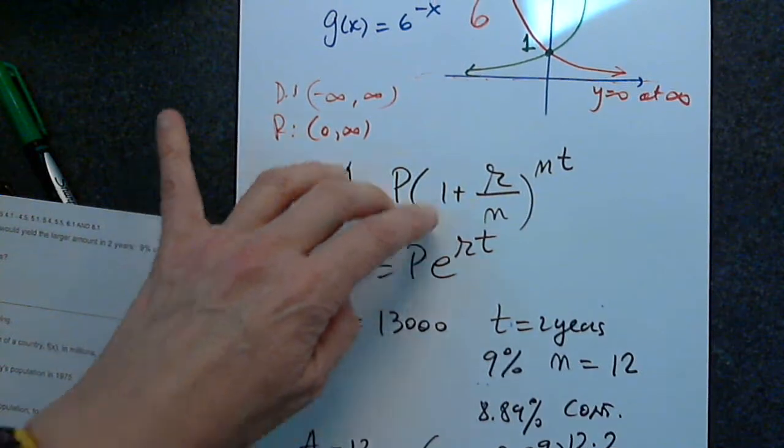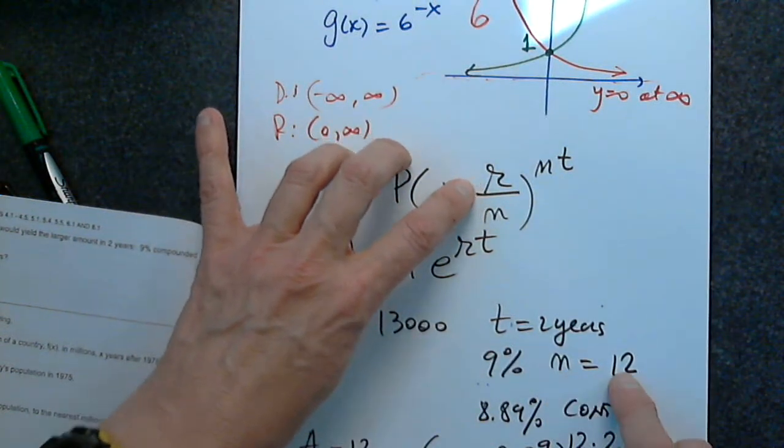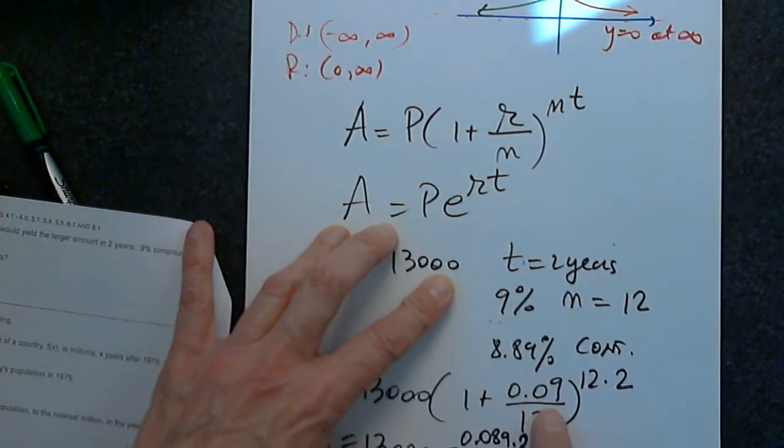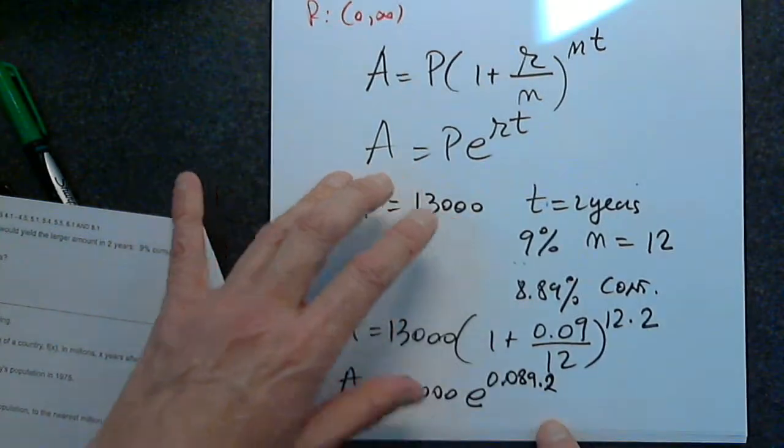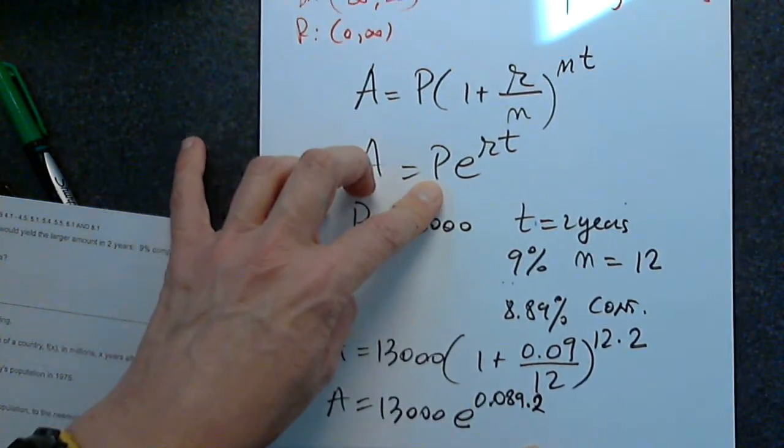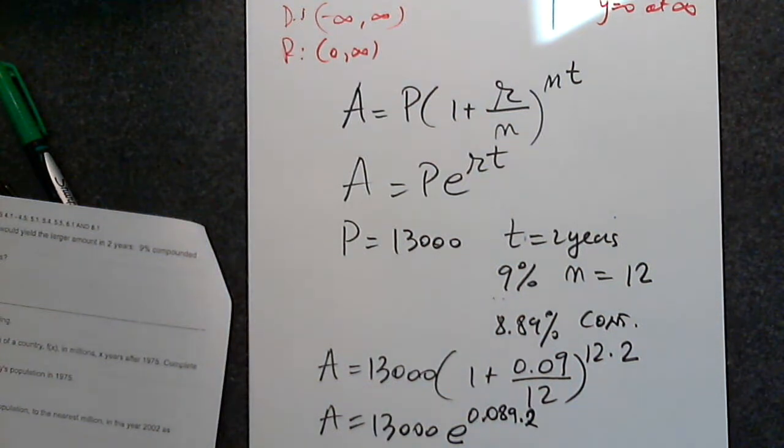All we did was plug in the numbers one more time. The P is the principal, which is 13,000. R is the interest in the first one, compounded 12 times a year, which is this 0.09. And N is 12 times 2, which is 2 years. And the other one is the interest compounded continuously, so it's P, E, RT raised to RT. Let's put this in the graphing calculator, both of them, and see what we get.